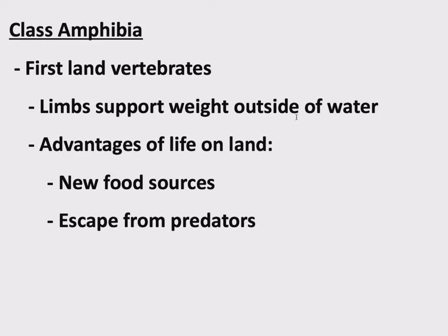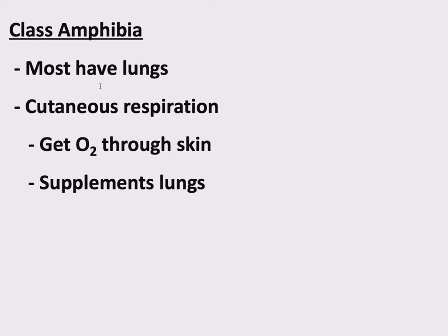Limbs that can support weight outside of water — and there were definitely some selective pressures that pushed towards this. There are advantages to living on land. One is new food sources. Plants made it to land first, so with plants in terrestrial environments there's an incentive to get on land as well, and also to escape from predators that are purely aquatic. If you're going to be on land, gills are not going to cut it, so amphibians had to evolve lungs to exchange gases with air.